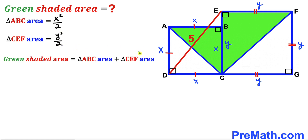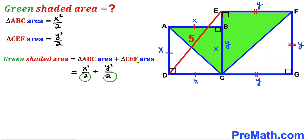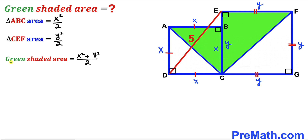Recalling our equation: the green shaded area equals the area of triangle ABC plus the area of triangle CEF. We found the area of triangle ABC as X² / 2 and the area of triangle CEF as Y² / 2. Combining these with a common denominator of 2 gives us: green shaded area = (X² + Y²) / 2. This is equation 1.